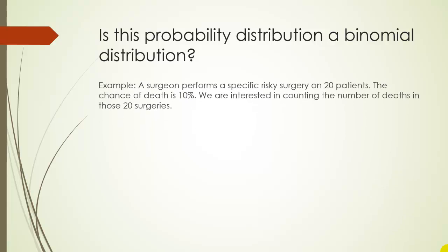So suppose a surgeon performs a specific risky surgery on 20 different patients. The chance of death for the surgery is 10%. Again, it is a risky surgery. So we're interested in counting the number of deaths in those 20 surgeries. This is something that the surgeon would want to know. He might want to know or she might want to know on average how many deaths should the person expect, or the standard deviation of deaths maybe, or what's the probability that, you know, six people die or four people die.